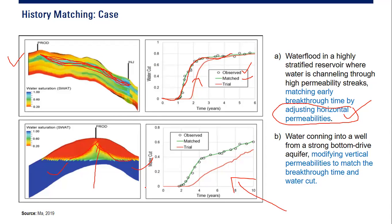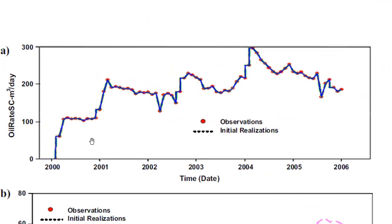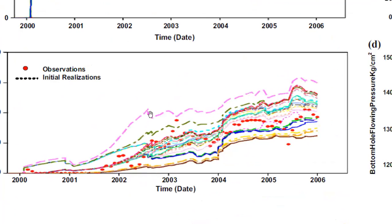Here is another history matching example at the reservoir level — the entire field. This is a good matching, almost perfect matching between observation actual data and the initial realization. We have many scenarios — some are good, some are bad — and you need to select the best scenario to obtain the best match.